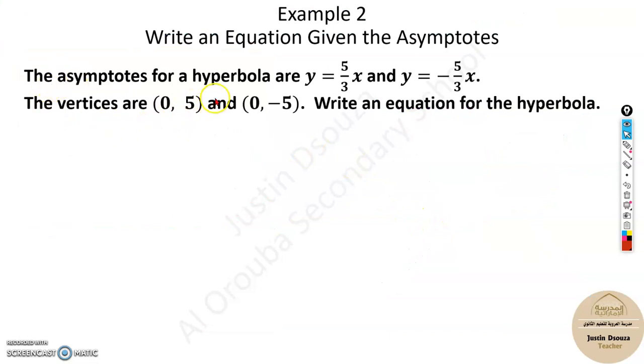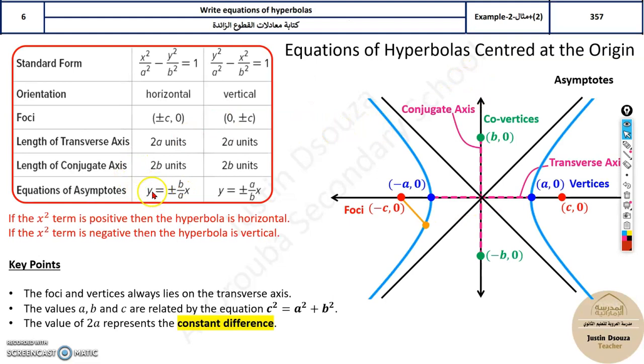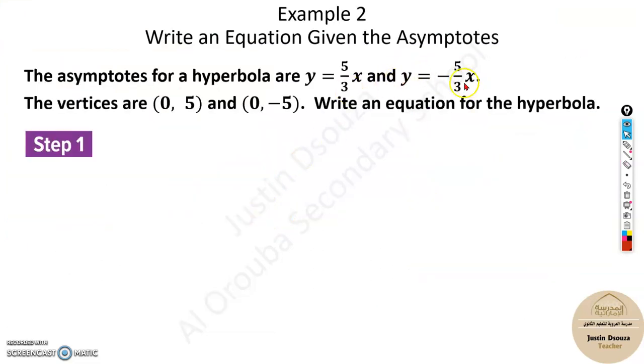The asymptotes for a hyperbola are y = 5/3x and y = -5/3x. Look over here: the asymptote is either b/a or a/b. We do not know which one because we don't know whether it's horizontal or vertical, and it's plus or minus.